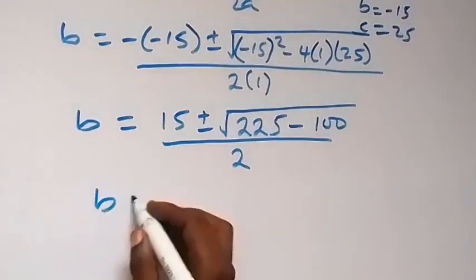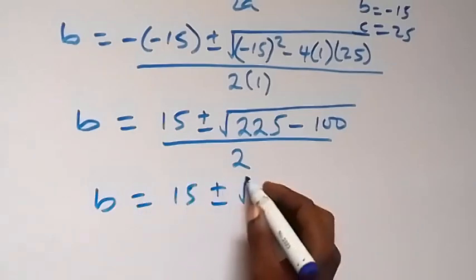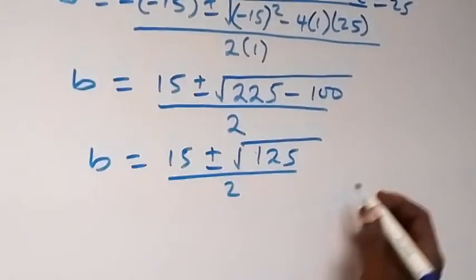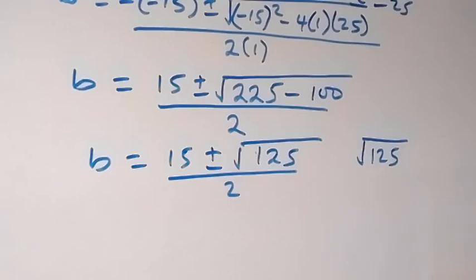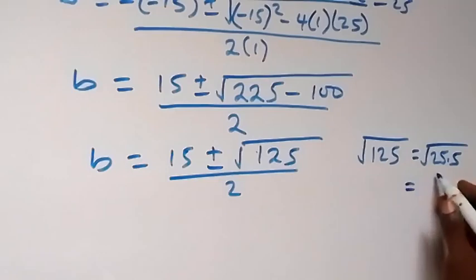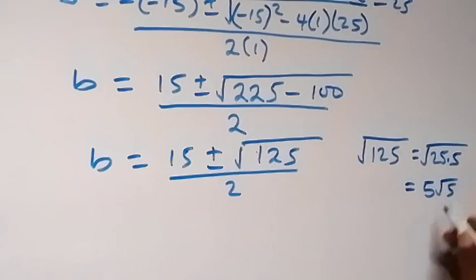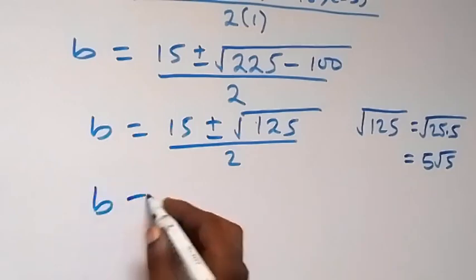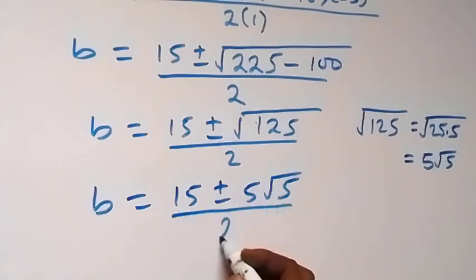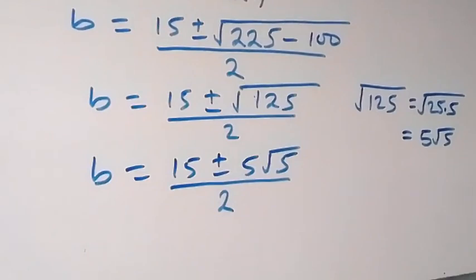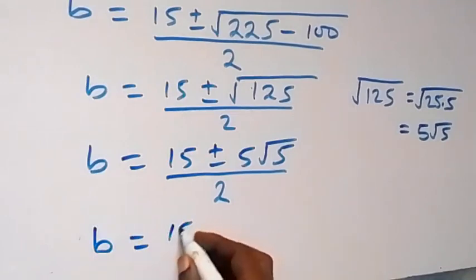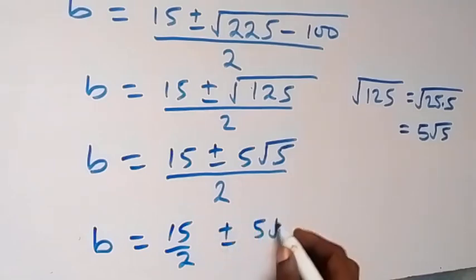This becomes B equals 15 plus or minus square root of 225 minus 100, over 2, giving square root of 125 over 2. We can separate 125 as 25 times 5, so root 125 equals root 25 times root 5, which is 5 root 5. Therefore B equals 15 plus or minus 5 root 5, over 2, which we can write as 15 over 2 plus or minus 5 root 5 over 2.